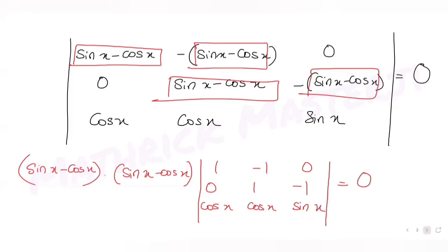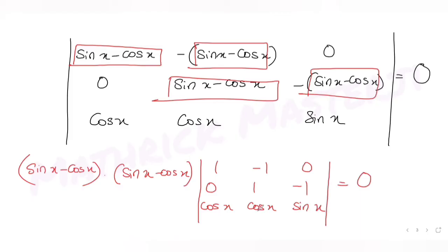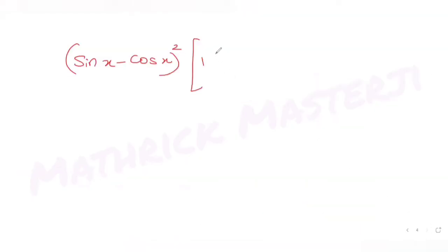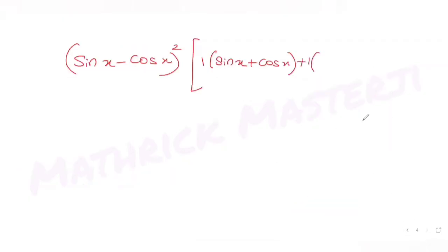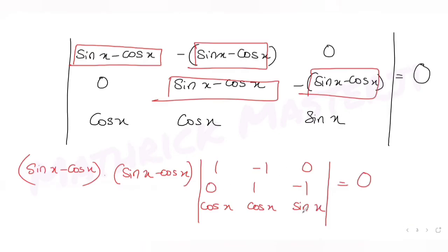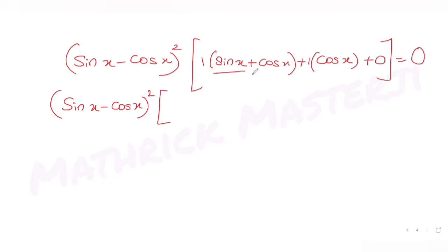Evaluating the remaining determinant: expanding gives sin x plus cos x, then plus one term, plus cos x again, resulting in sin x plus two cos x. So the full equation becomes (sin x minus cos x) squared times (sin x plus two cos x) equals zero.